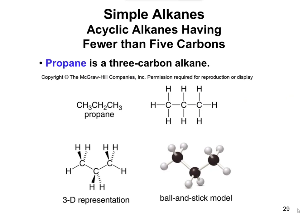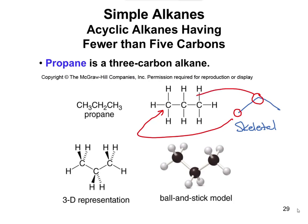Propane is a three-carbon alkane. You have the condensed and complete structure, and we can also draw the skeletal structure. In the skeletal structure, whenever a line ends, you have a carbon with as many hydrogens needed to give it four bonds — so that end represents a carbon with three hydrogens. The middle would be your CH2, and the other end is another CH3.